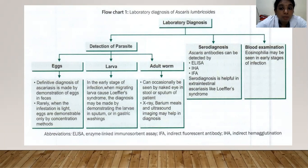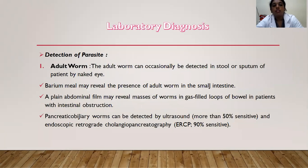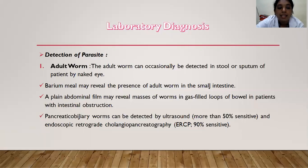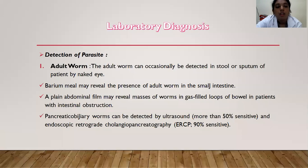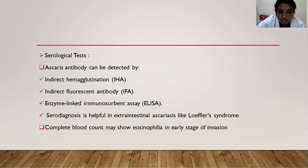For serodiagnosis, ascariasis antibodies can be detected by ELISA, IHA, and IFA. Serodiagnosis is helpful in extra-intestinal ascariasis like Löffler syndrome. Blood examination may show eosinophilia in early stages of infection. Larvae can also be assessed by serological tests and complete blood count.